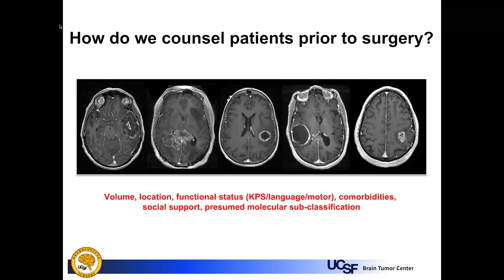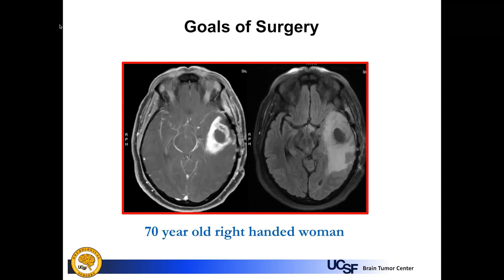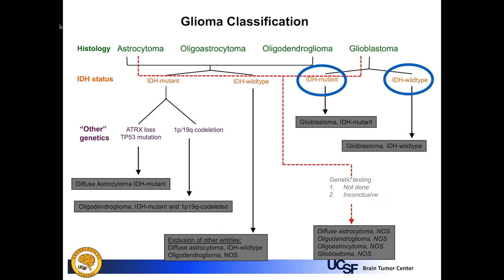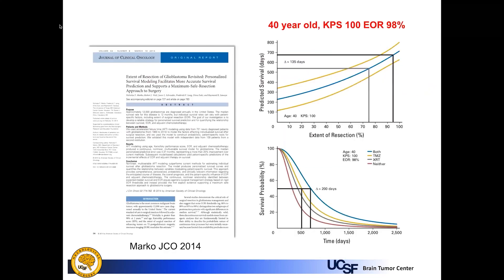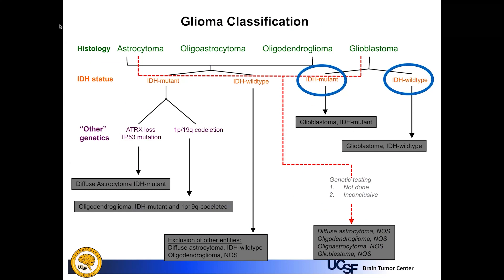If we use a case example — a 70-year-old right-handed woman presenting with a left-sided contrast-enhancing scan — what are our goals of surgery? Much of the decision about surgical goals has been based on data before 2016, when WHO changed the classification of gliomas. High-grade gliomas, glioblastoma specifically, have been separated into two distinct clinical entities: those with IDH mutation and those with IDH wild-type subtypes.